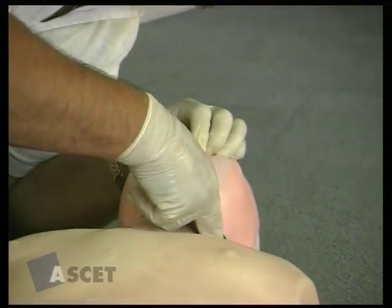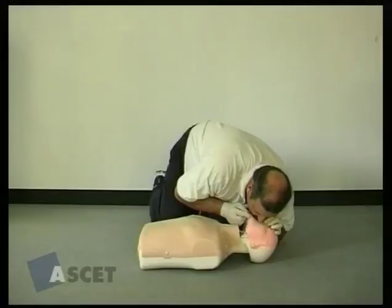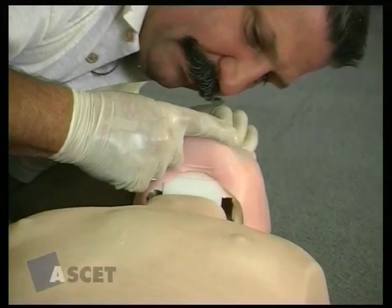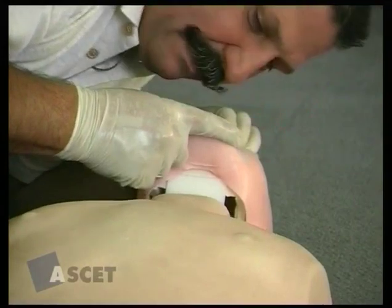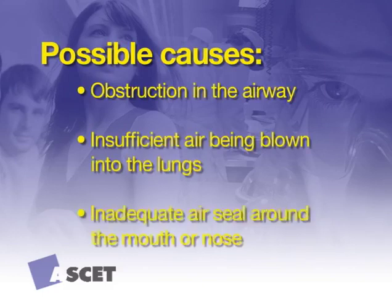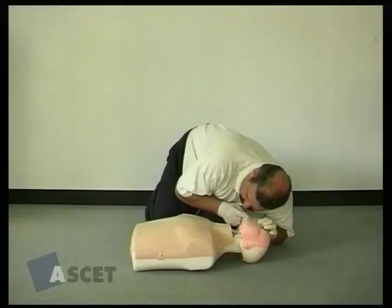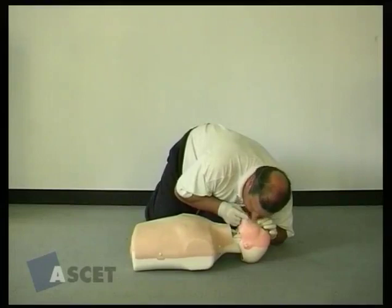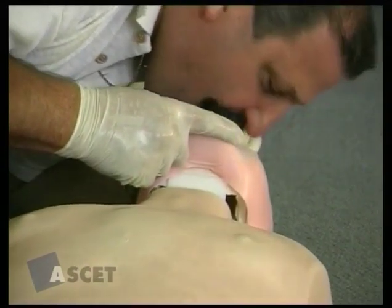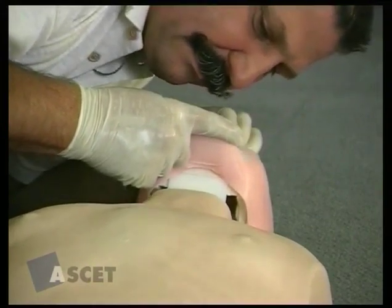Remove the dentures only if they are broken or become so loose that they block the airway or make it difficult to give breaths. Look, listen and feel — look for rise of the victim's chest during each inflation. If the chest does not rise, possible causes are: obstruction in the airway, inadequate head tilt or chin lift, tongue or foreign material, insufficient air being blown into the lungs, or inadequate air seal around the mouth or nose. If the chest does not rise, ensure correct head tilt, adequate air seal and ventilation. Following inflation of the lungs, lift your mouth from the victim's mouth, turn your head towards the victim's chest and listen and feel for air being exhaled from the mouth and nose.